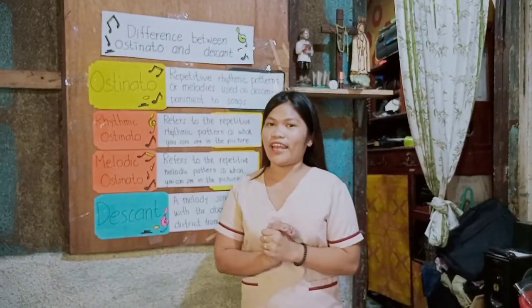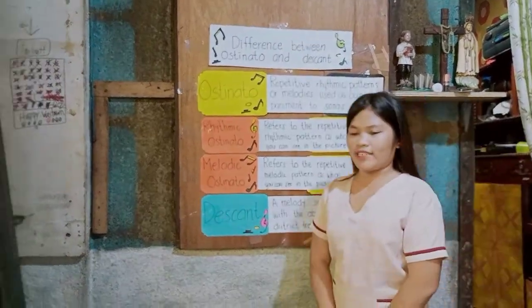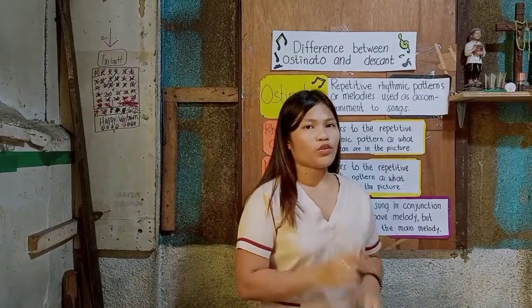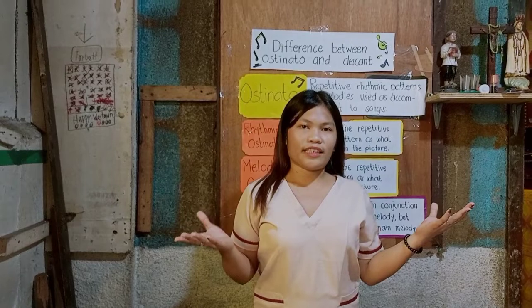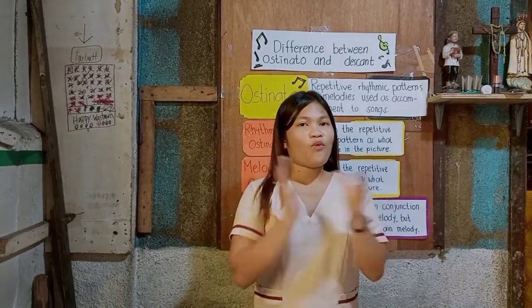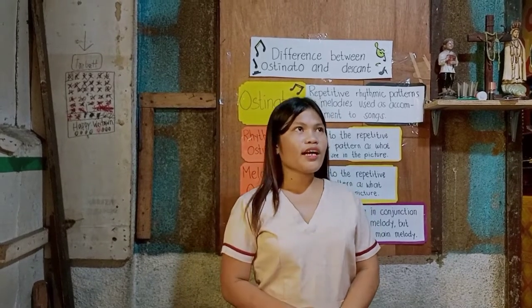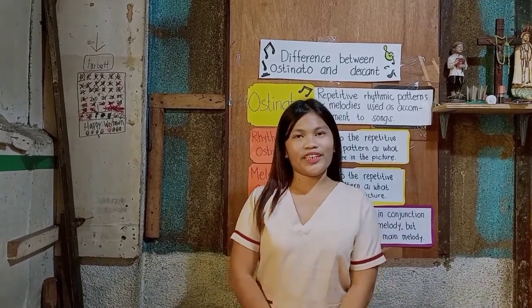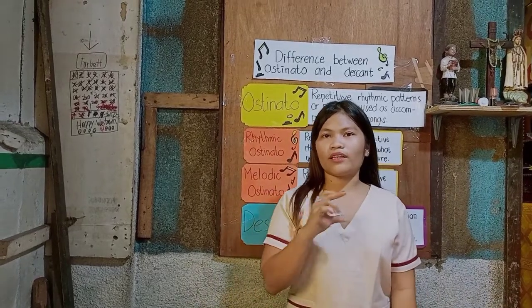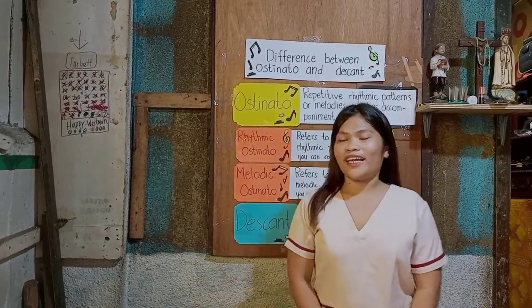Have you understood today's topic class? Very good. Since you understood the difference between ostinato and descant, let me ask some questions. What are the two parts of ostinato? Very good, Ria — rhythmic ostinato and melodic ostinato. Give Ria five claps! What are the musical tones that produce chords in a song? Very good, Rika — Harmony. And what refers to the thickness or thinness of a song? Very good, Julia — Texture.